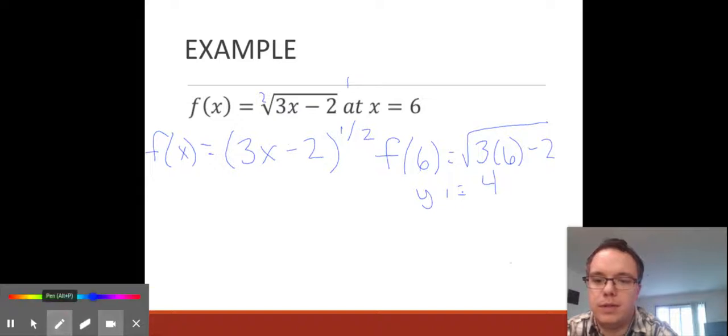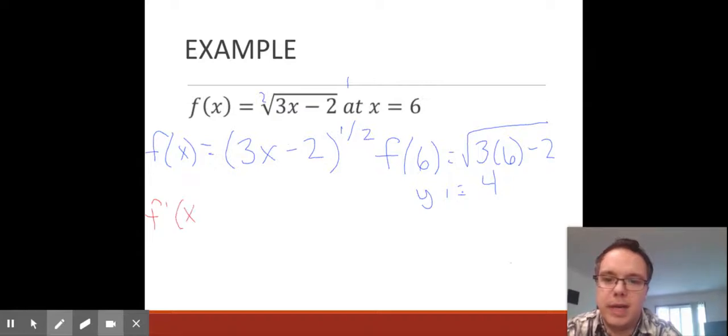We're going to use the chain rule here to find our derivative. We bring down our power, which is 1/2. Keep what's in the parentheses the same. Subtract 1 from our 1/2, which is negative 1/2.